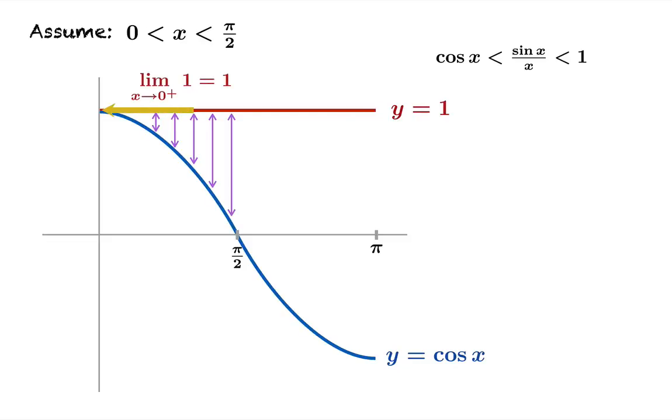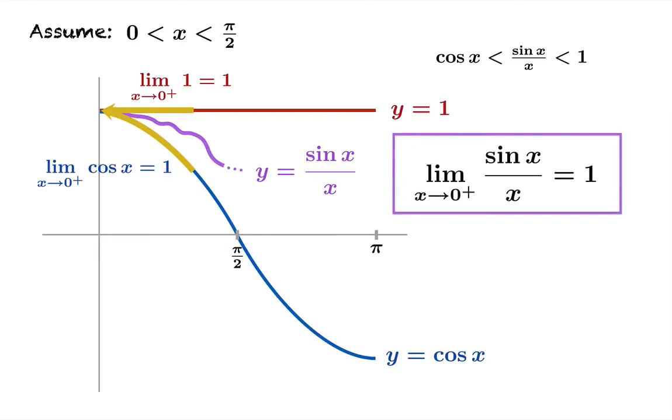Now the limit as x approaches zero from the right of one is of course one as is the limit of cosine x as x approaches zero from the right. And that means that sine x over x is forced between these two graphs as x approaches zero from the right. It's squeezed in towards this point and the limit as x approaches zero from the right of sine x over x is one.